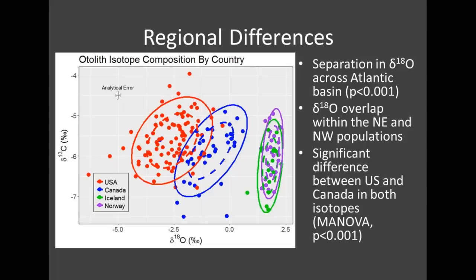What we're looking for is the level of separation between these clouds of points. We can see distinct separation between the Northeast Atlantic and the Northwest Atlantic, showing that different populations have different isotopic compositions, especially in terms of oxygen isotopes. Within the population, there's very high overlap in the Northeast Atlantic. In the Northwest Atlantic there's some degree of overlap between the US and Canada, despite significant isotopic differences being found for both carbon and oxygen. We also see much higher variation for the US and Canadian samples, and with good spread across years we can look at that variation more deeply.